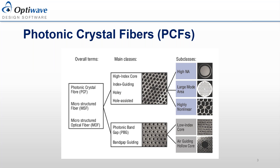The second class is the photonic band gap fiber, and these are the ones we'll be focusing on today. These have a low index or air core, and therefore do not have the same confinement operation as a conventional fiber. In these fibers, the photonic crystal structure and the band gap that comes with it is such that light propagating through the core cannot propagate outside of the core, and therefore confinement is achieved.